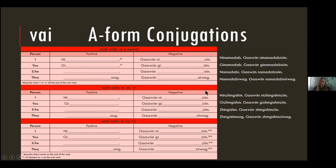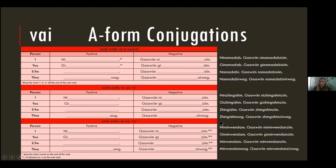If your verb ends in an N, using shingashin as the example, it's the same — just plug it into the blank spaces. Nindzingashin — I am lying down. Gawin nindzingashin zi — I am not lying down. And then if your verb ends in an M, I'll use minlendam again as the example.